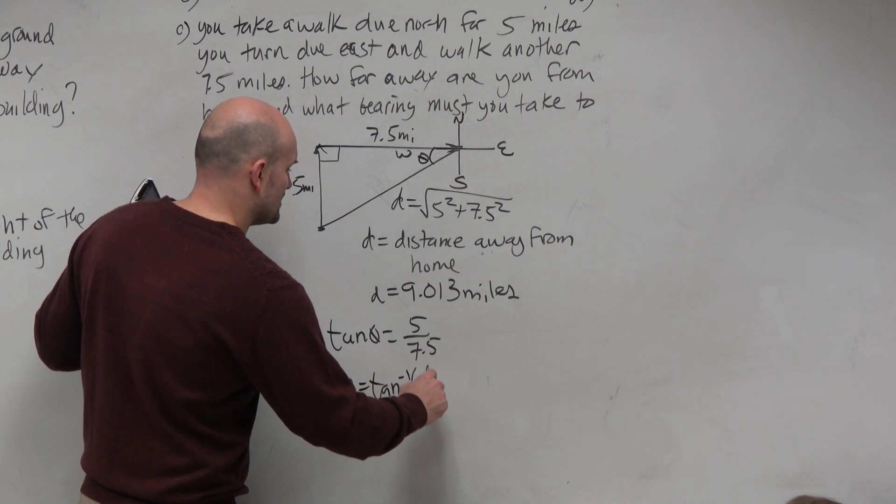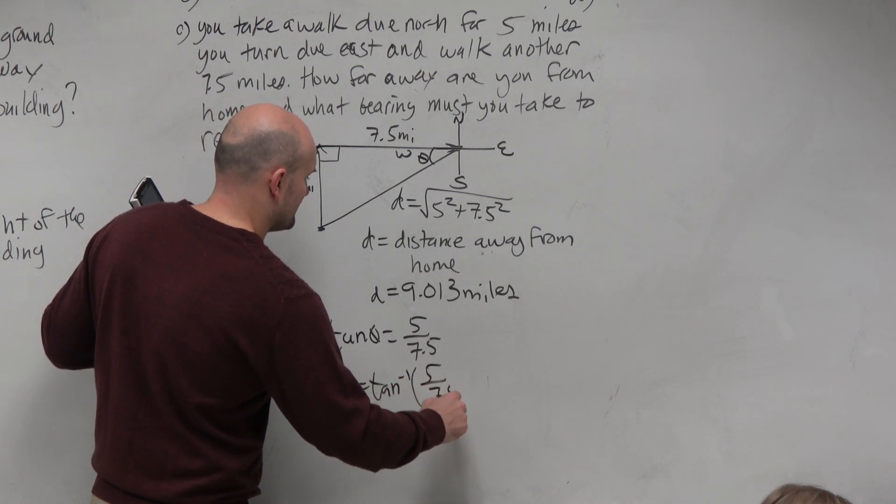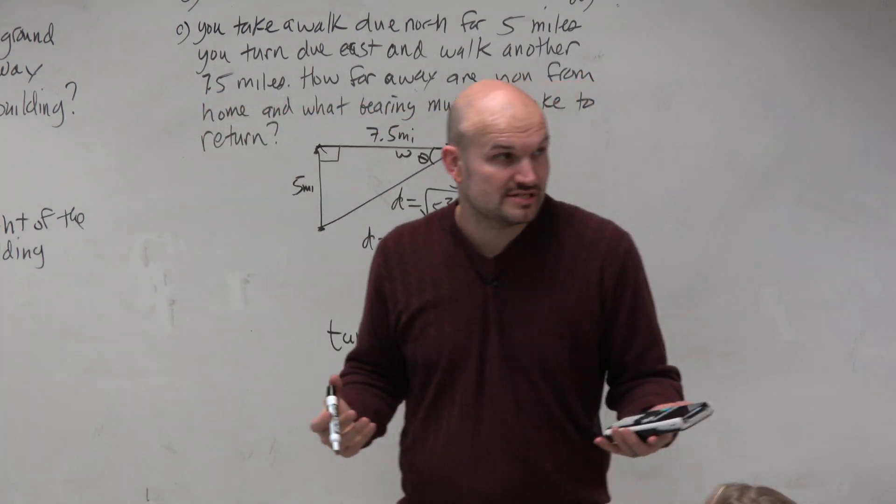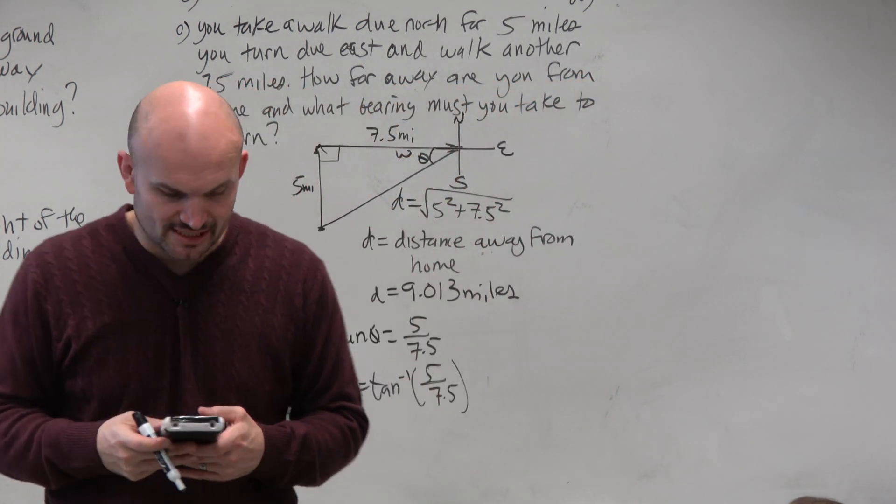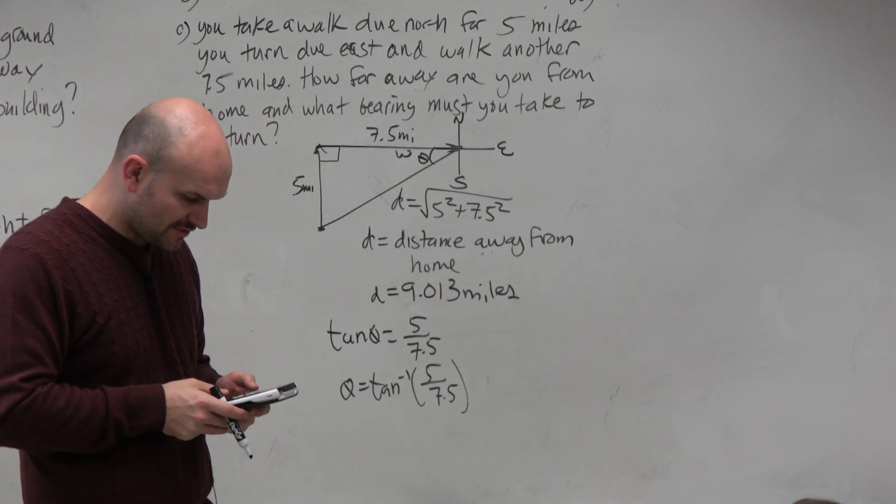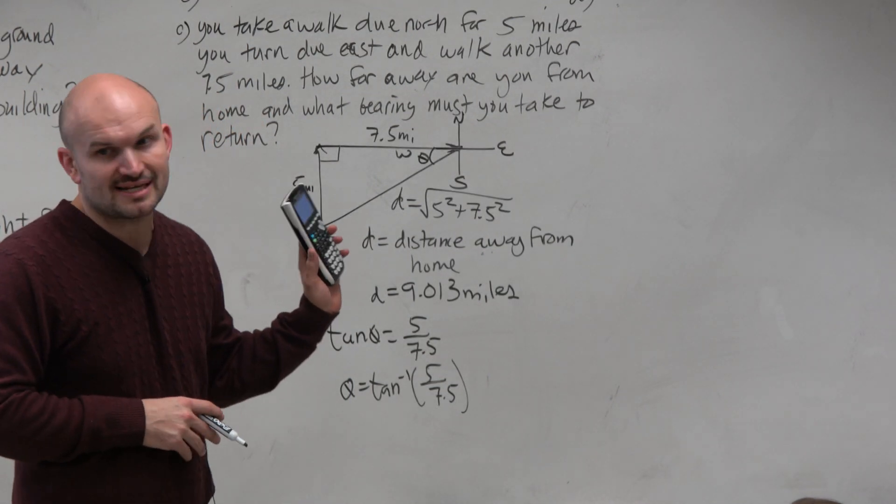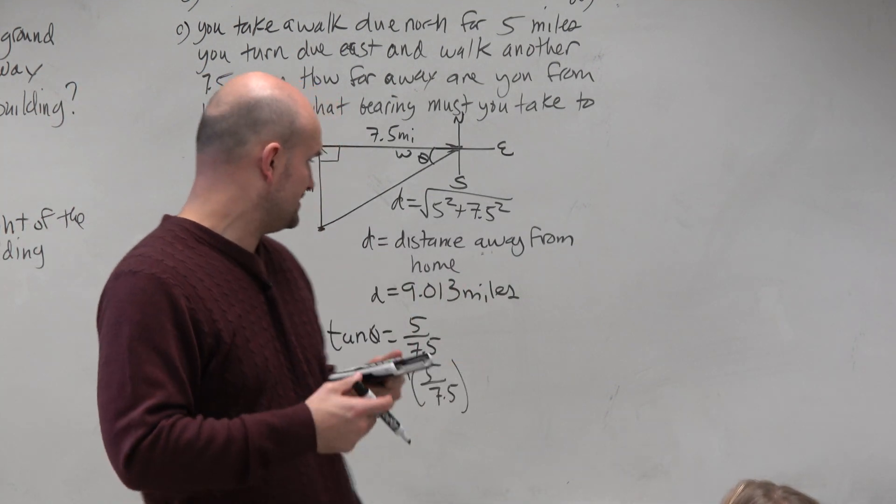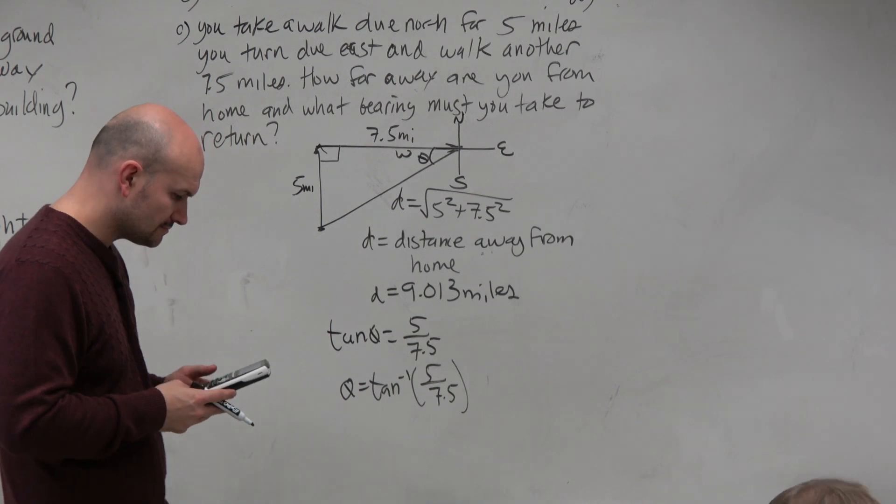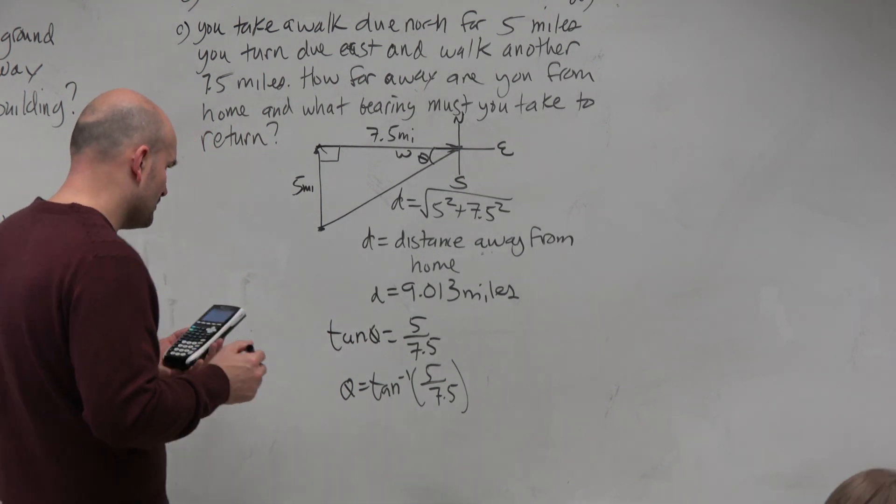So I'm going to take the tangent inverse of 5 divided by 7.5, right? Because there's only one answer, right? And we know that using tangent inverse is going to, that restriction is going to give us that one answer. So in this case, I'm going to do tangent inverse, which for a calculator, you're going to do second tangent or whatever on your calculator it is, and do 5 divided by 7.5. And that gives me 33.69.